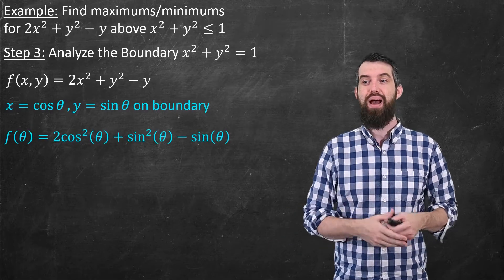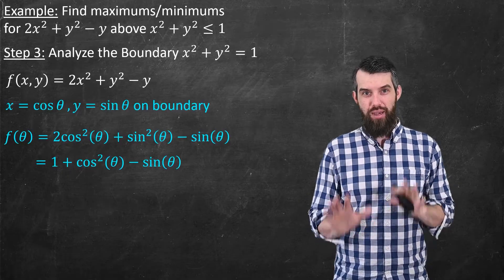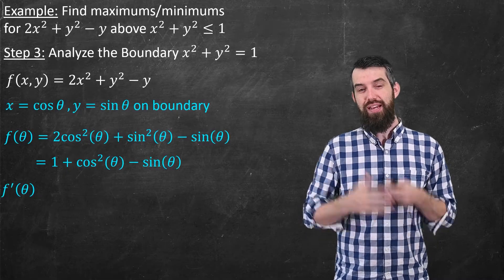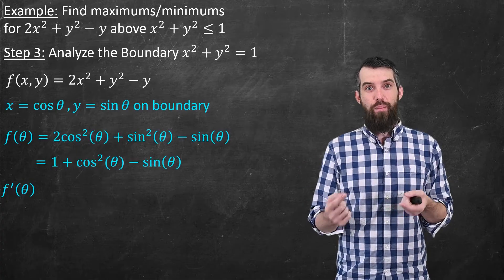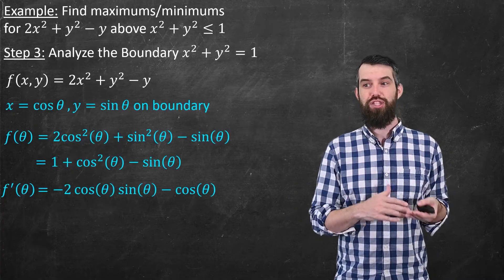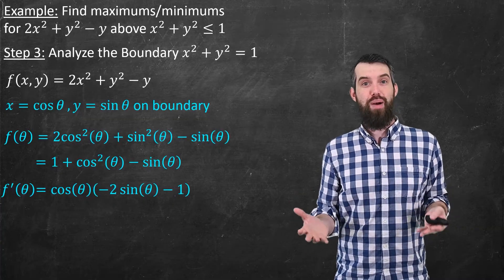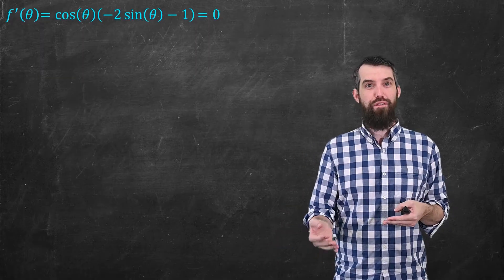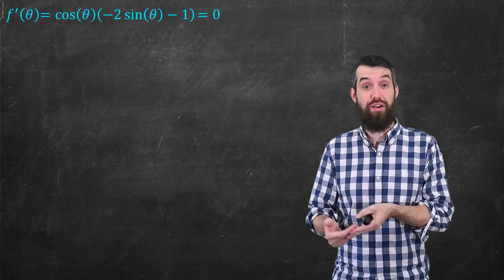Substituting into f gives f(θ) = 1 + cos²θ - sin θ. The reason this is good is that I've written it as a single-variable function of θ, so I can compute f′(θ) and do the kind of optimization from single-variable calculus — take the derivative and set it equal to zero. By using this parametrization, the multivariable function along the boundary has turned into a single-variable function of θ. The derivative is f′(θ) = -2cos θ sin θ - cos θ, which I factor as cos θ(-2sin θ - 1). Setting this equal to zero gives all θ values where the function along the boundary is maximum or minimum.